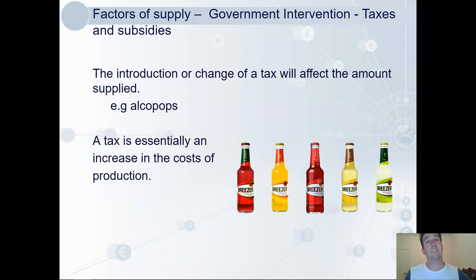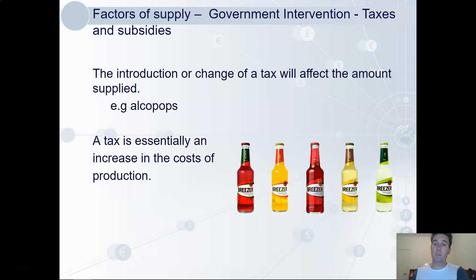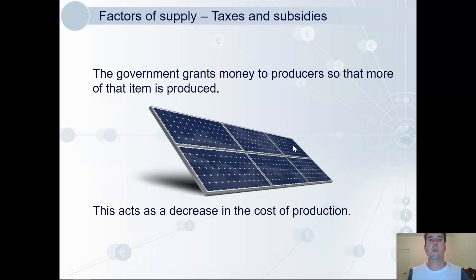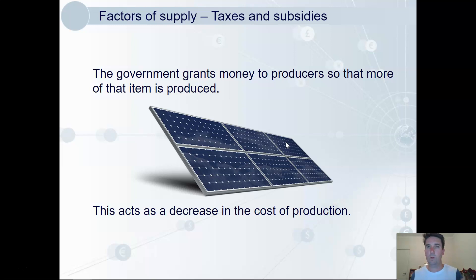Government intervention can affect supply through taxes and subsidies. A tax, like those imposed on alcohol, increases costs to the producer — in addition to ingredients, bottles, and distribution, they also give the government money for each bottle sold. It's essentially an increase in cost of production, decreasing profitability and making producers less willing to supply. A subsidy is the opposite: each solar panel supplied in Australia is subsidised, so firms get money for each one sold, effectively reducing costs of production, increasing profitability, and making producers more willing to supply.